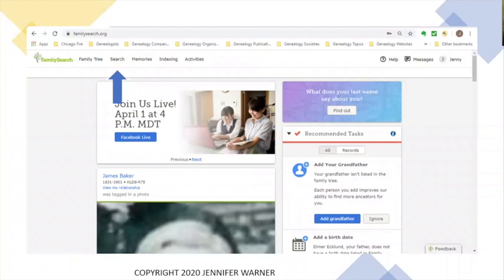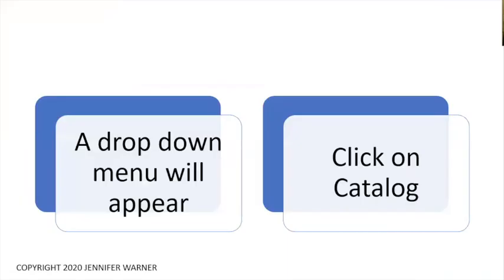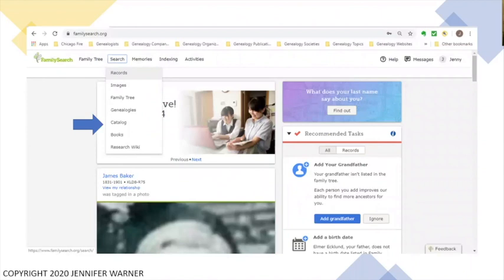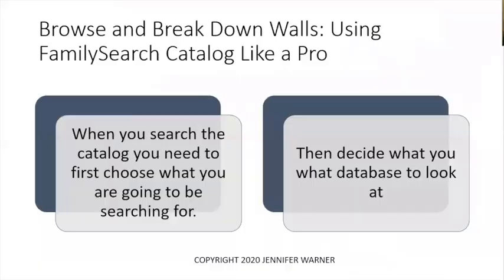After you've signed in, the first thing you want to do is click on the Search menu, because that's where the actual catalog is. So you click on the Search button. You'll see a drop-down menu, and the third from the bottom is the catalog. That's where we're going to focus today — we click on Catalog.